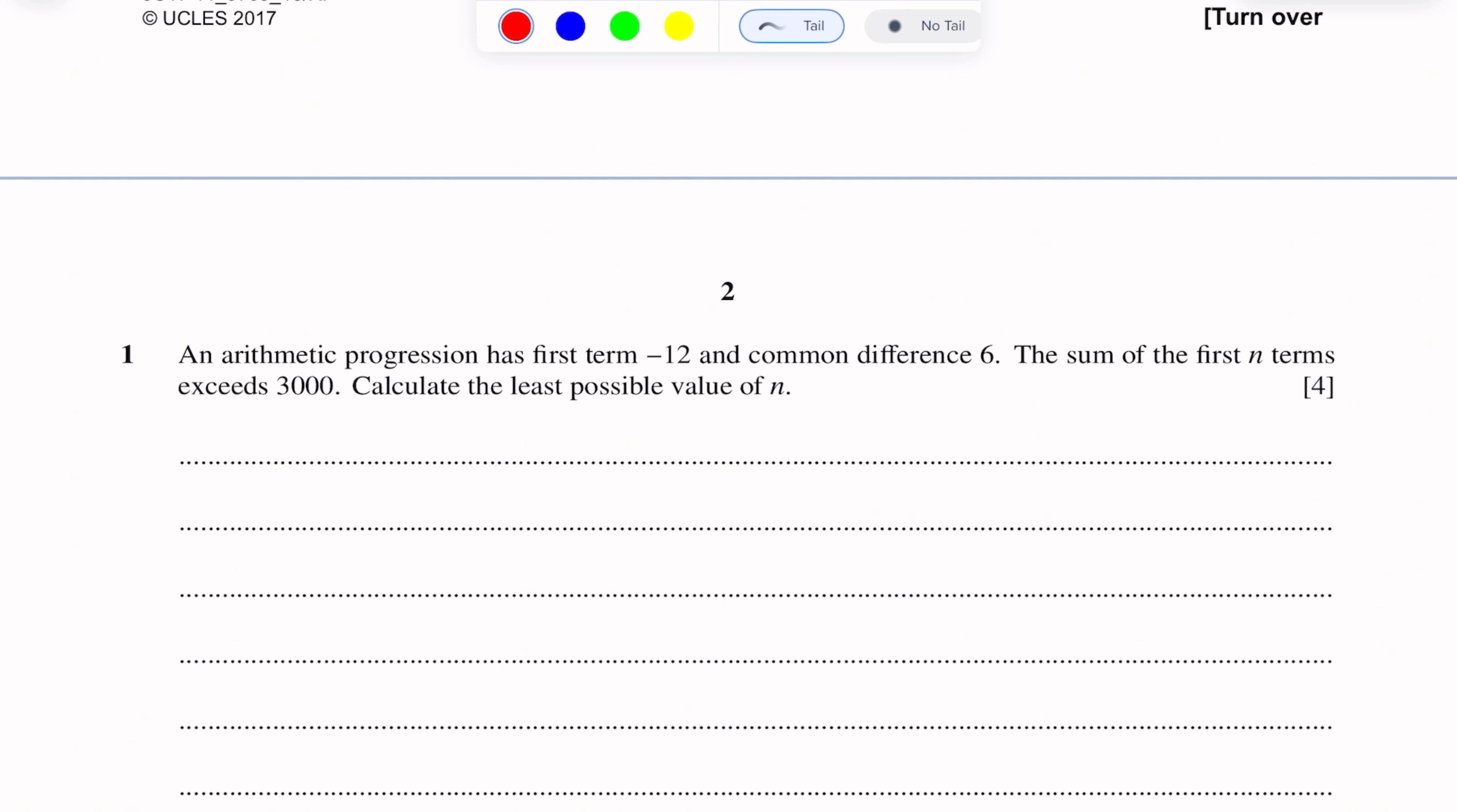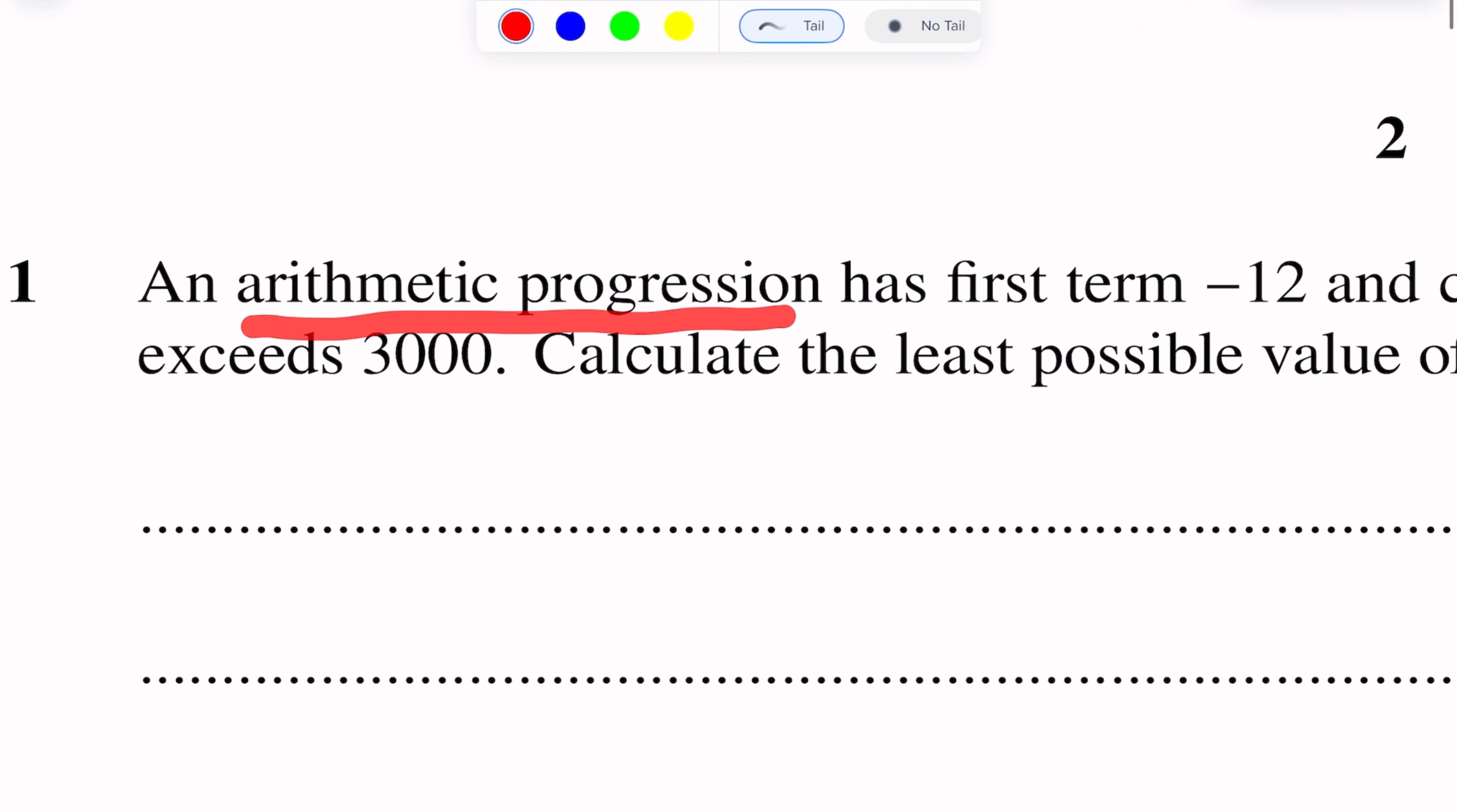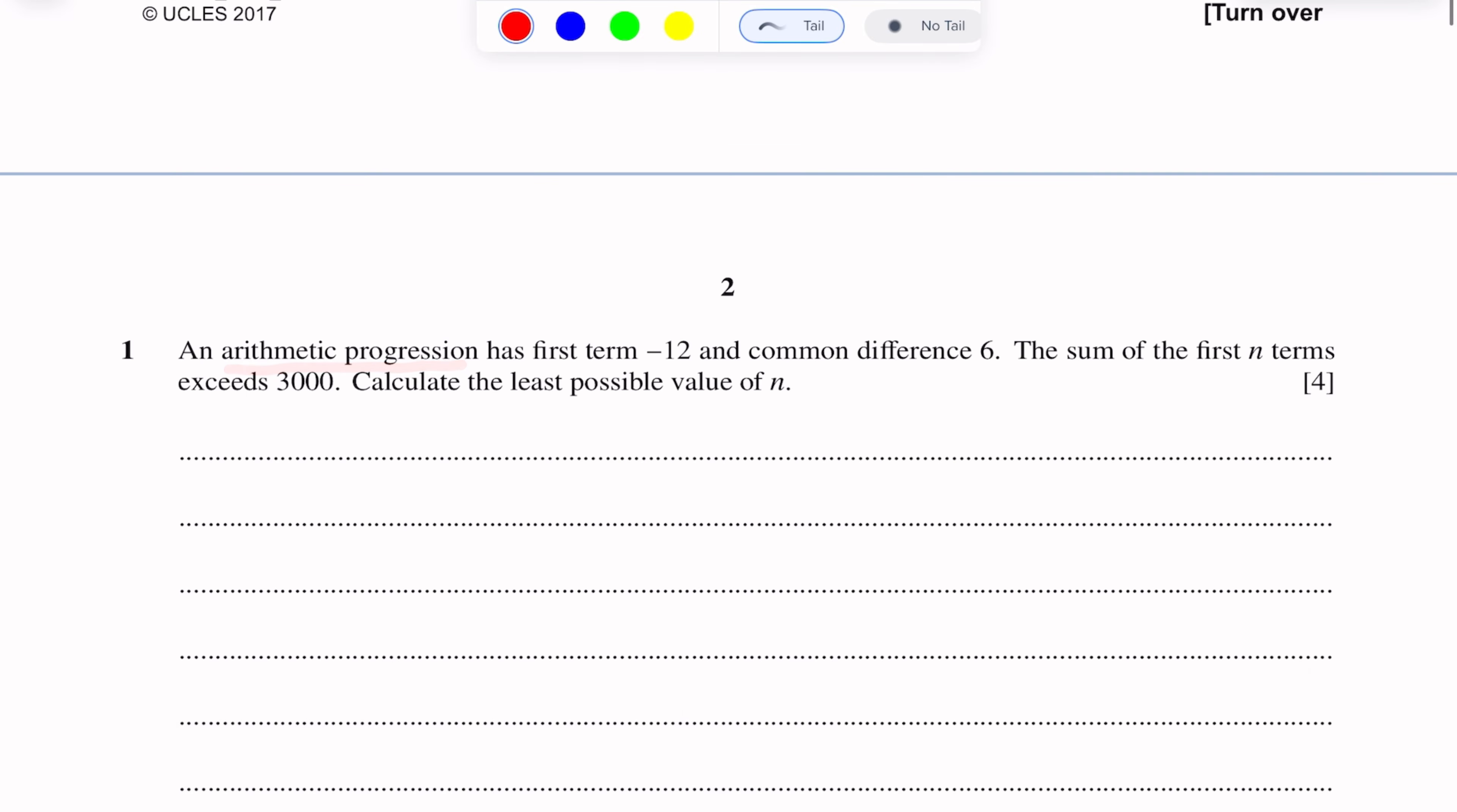The first question of this paper is of arithmetic progression. An arithmetic progression has first term minus 12 and common difference 6. The sum of the first n terms exceeds 3000. Calculate the least possible value of n.